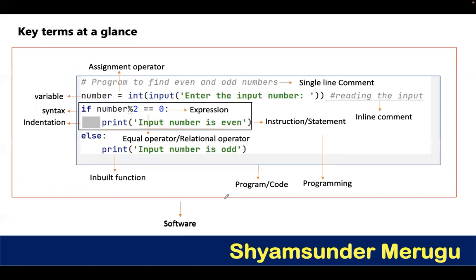Now let us see the key terms which basically come in a program. Consider a small program to find even and odd numbers using Python. There are six lines. Each line, apart from comments, is an instruction. If any line is started with a hash symbol at the beginning, we call that commenting — here it is only for a single line, so it will be called a single-line comment. That particular line cannot be executed — it will be ignored. Here a string is given — a collection of characters is called a string.